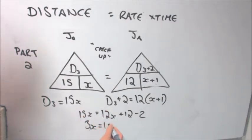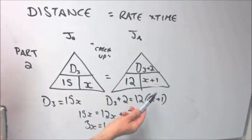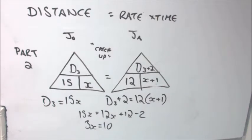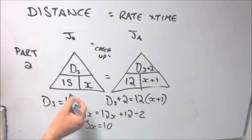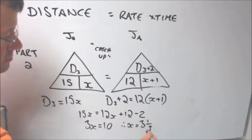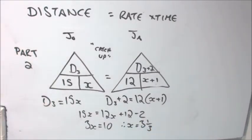So a little bit of manipulation, pause if you need to, you can very quickly get down to 15X is 12X plus 10. Move the 12X to the left hand side. We get 3X is 10 and therefore X, which remember represents the amount of time it takes for John in this particular case in part two to catch up with Jacob. Cause remember Jacob's already caught up with John and then overtaken him. And we can then say that in three and a third hours, 10 divided by three, John will have caught up with Jacob because that way the distances traveled are equal.